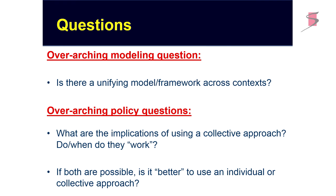What I've been interested in is whether there is a unifying modeling framework that cuts across these contexts and might be useful in identifying the conditions under which these approaches might be effective. The modeling question is whether there's a unifying model we can use across these contexts, tied to the policy question about the implications of using a collective approach: when would you expect them to work, when not? If both are possible, would you be better off allocating rights individually or collectively? For example, in a fisheries context, you could allocate quota as an ITQ individually to vessels, or allocate a total allowable catch to a group of fisheries.